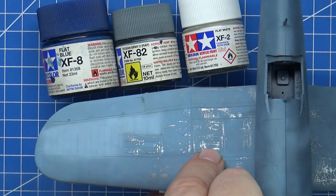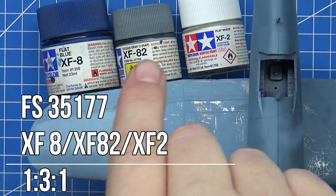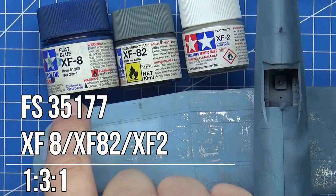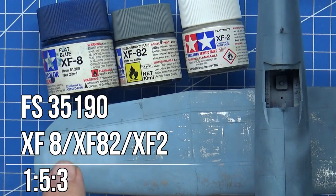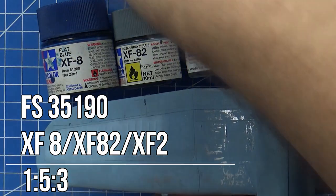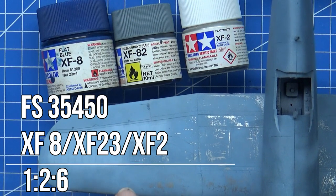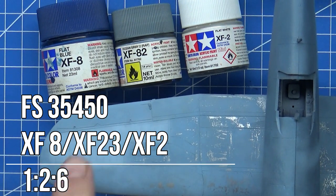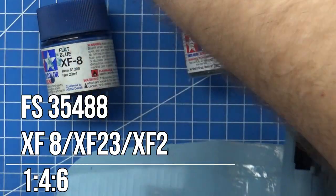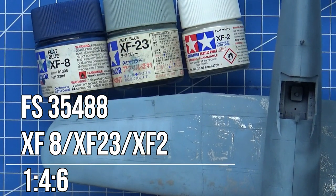For the birdcage, I'm using a blend of flat blue, ocean grey, and white. I'll put some ratios up on the screen to explain how I've got those different values. For the 35177, I've used a combination of a 1:3:1 combo. For the 35190, it's a 1:5:3, so we're really dialing back the flat blue. And then I sometimes would add a little bit of the XF23, the light blue, because that desaturates and gives a little bit of a green hue. And then for the 35450, now we're moving to almost to the white, the bleached, and then the 35488, we're swapping out the 82, and we're going straight to the light blue.